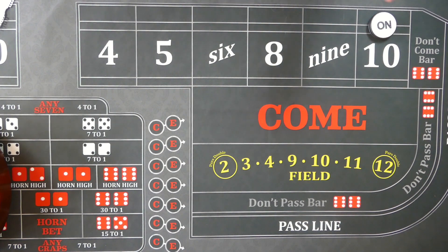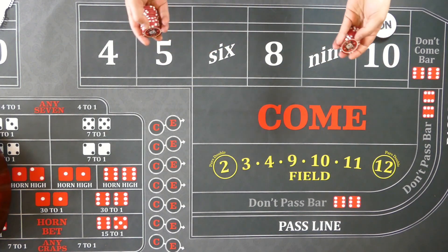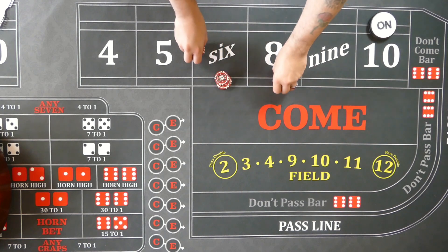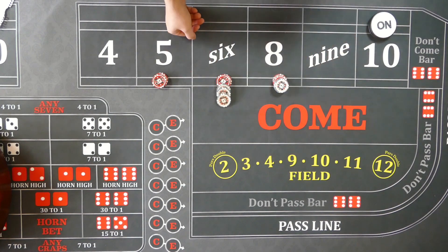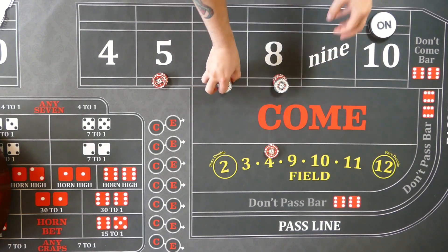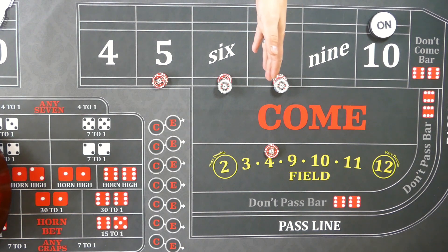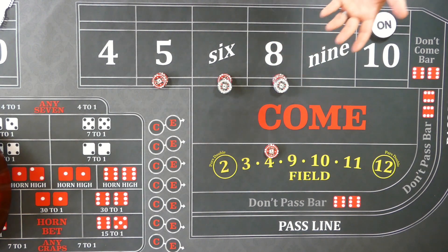So everybody knows the Iron Cross of course. Now if you're on a $10 table then a proper Iron Cross would be three units each on the five, six and eight and two units on the field or that $10 minimum.